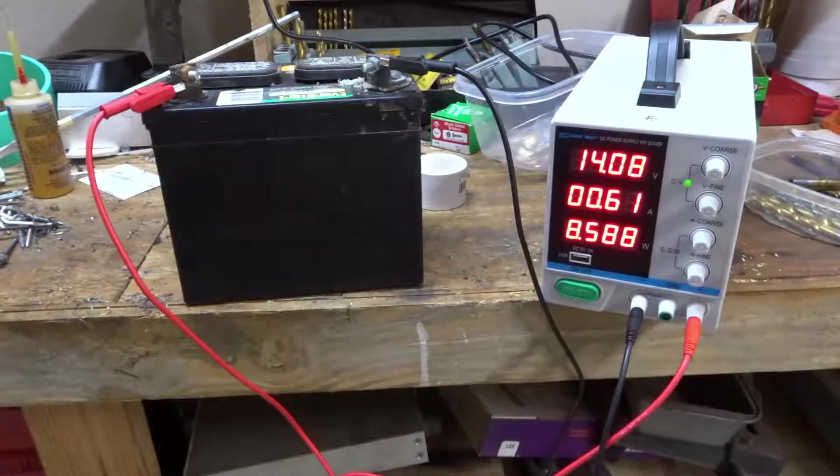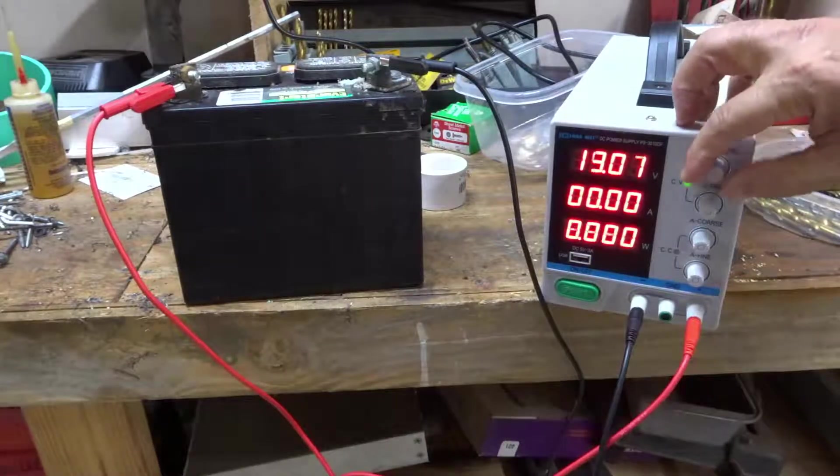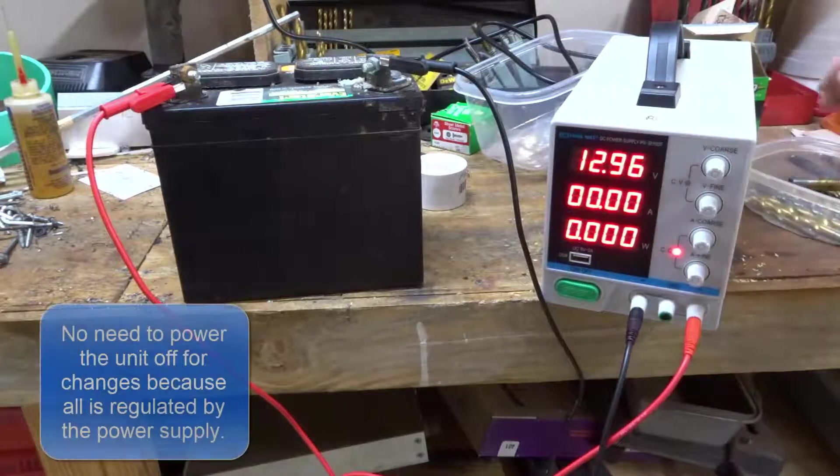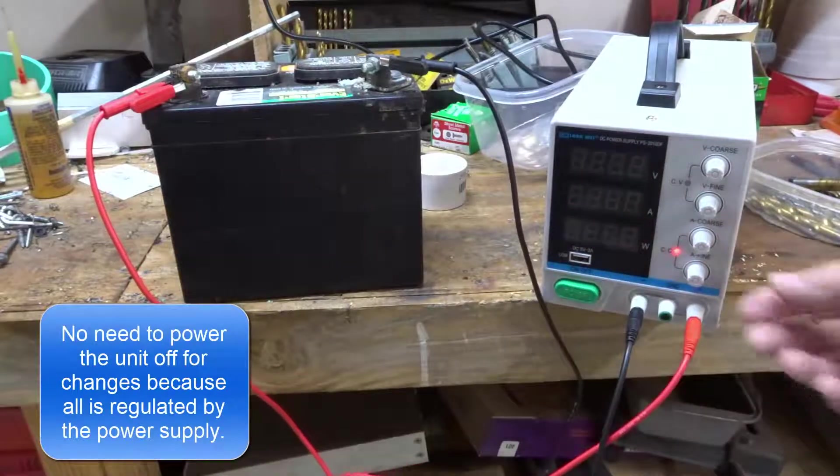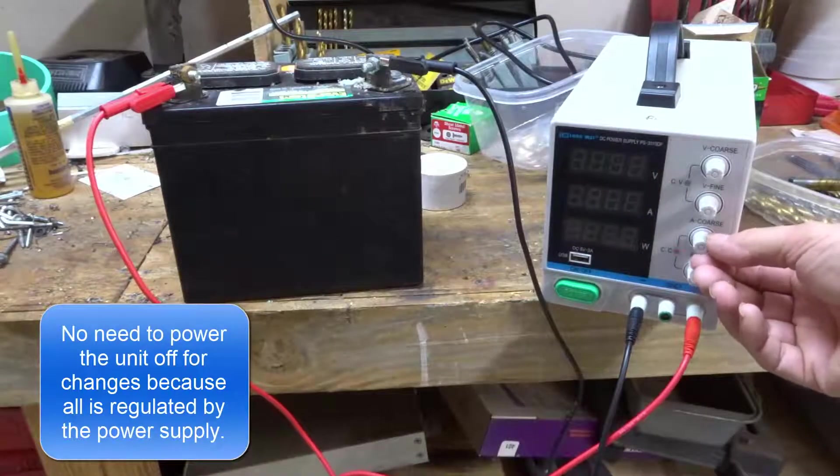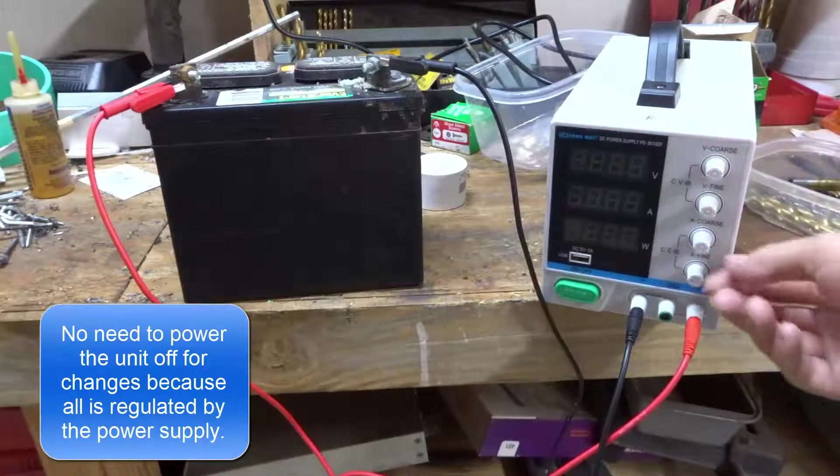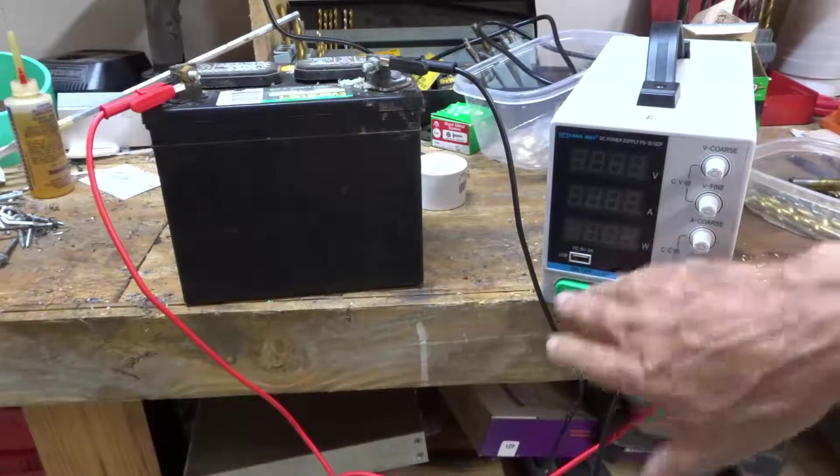If I wanted to do it another way, I can turn down the voltage, turn down the current, power the unit off, set the voltage on maximum, leave the current on minimum and start it up.